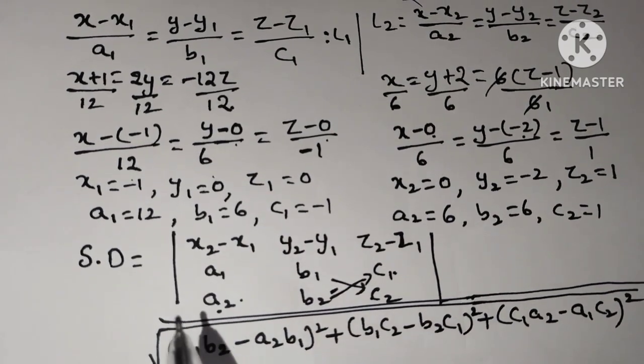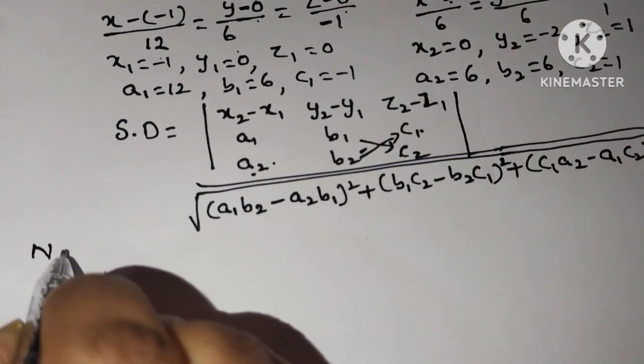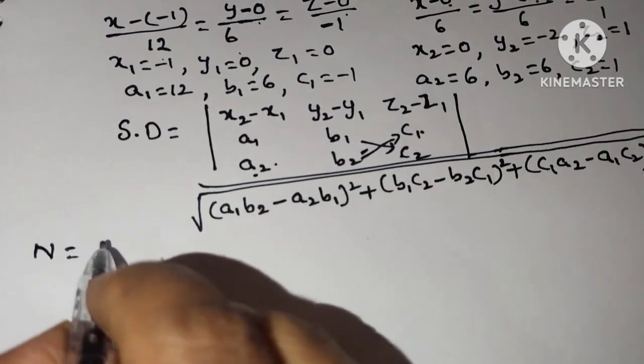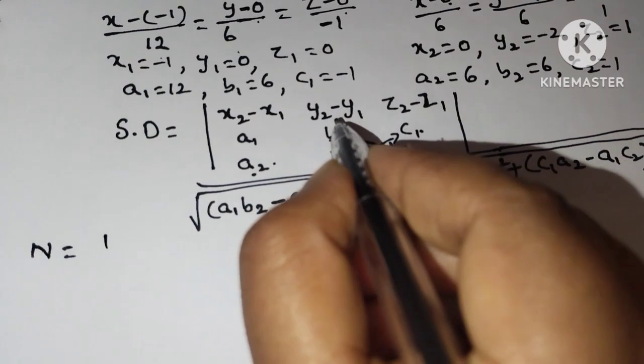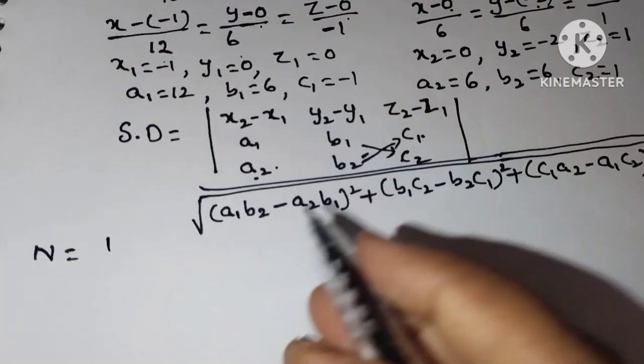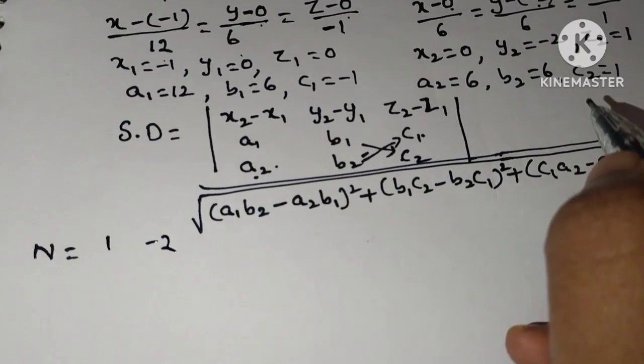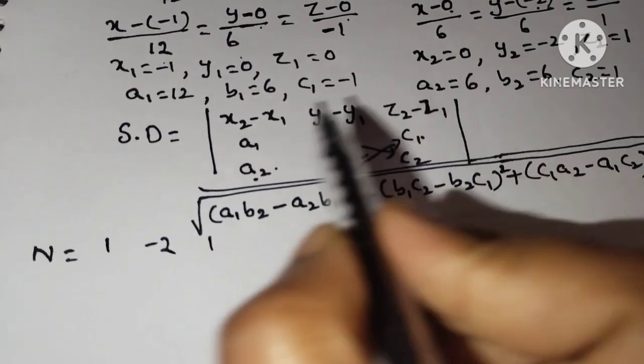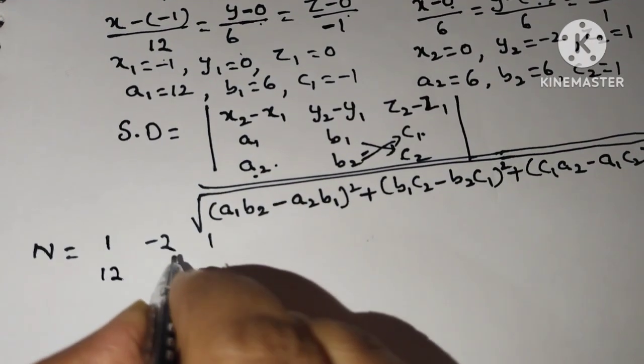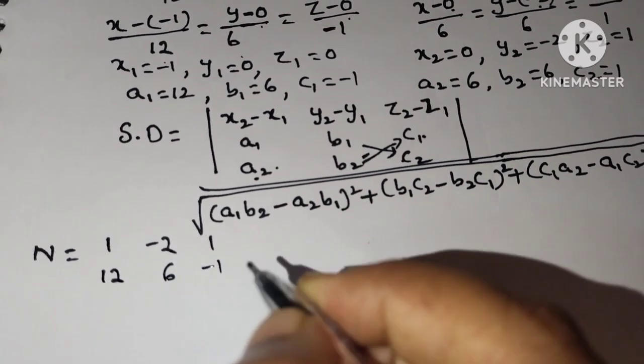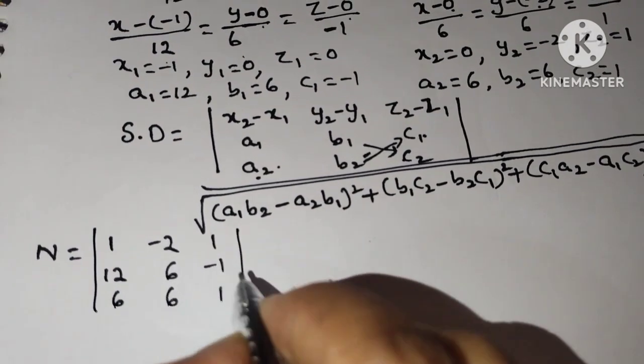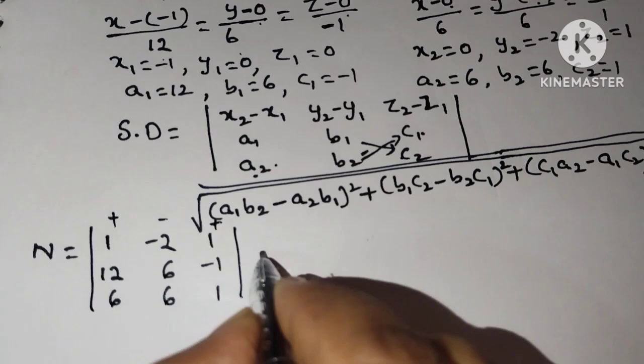So it is the shortest distance formula. Now find numerator separately, denominator separately and substitute in this formula. So numerator is x2 minus x1. What is x2? 0 minus minus 1, that's plus 1. This is y2 minus y1. y2 is minus 2, y1 is 0, so minus 2. And z2 is 1 minus 0, that is 1. Next, after that a1, b1, c1. a1 is 12, 6, minus 1. a2, b2, c2: 6, 6, 1.